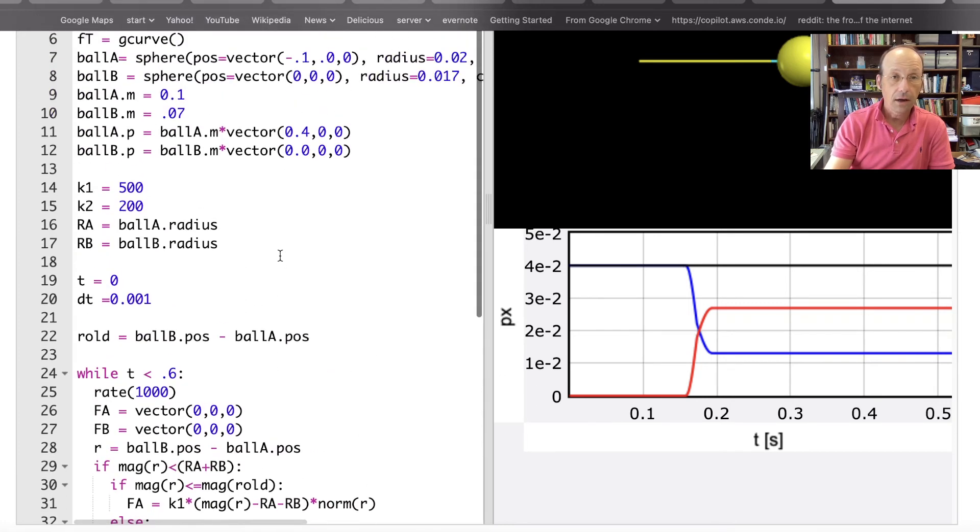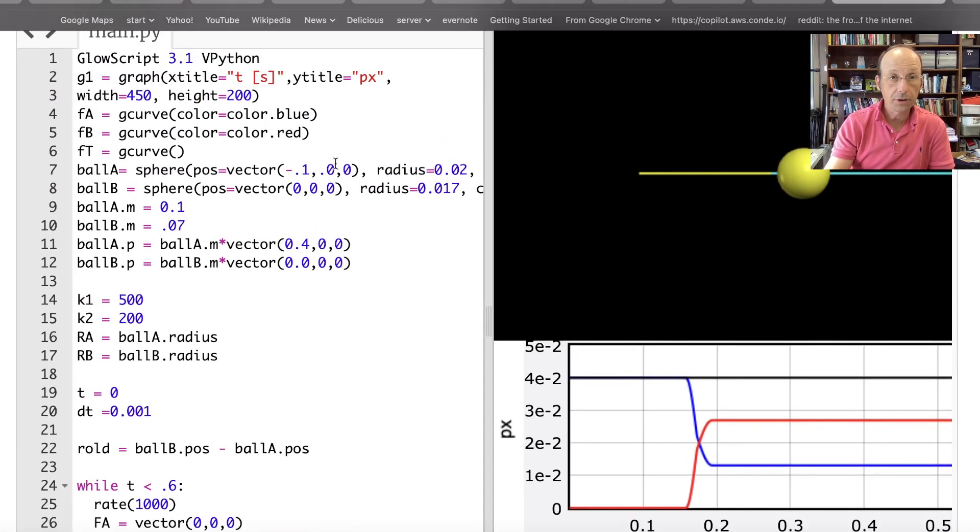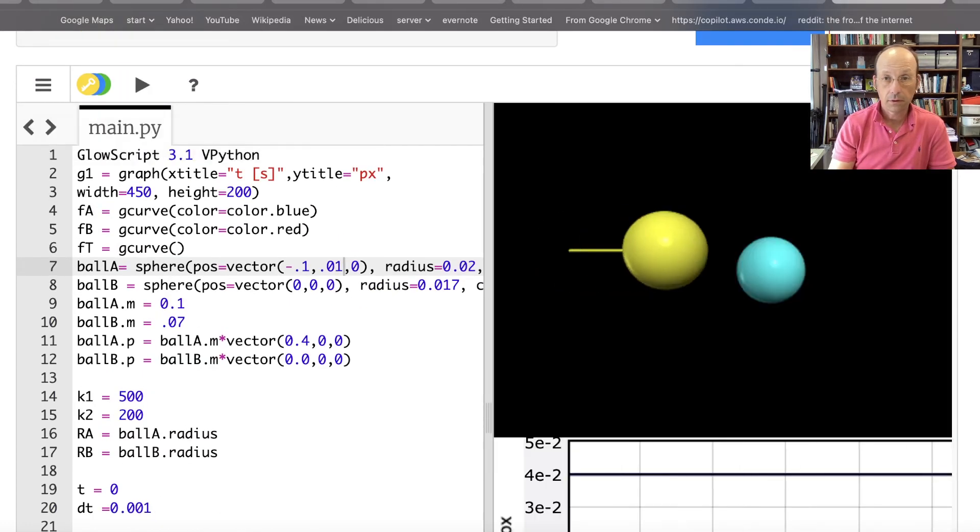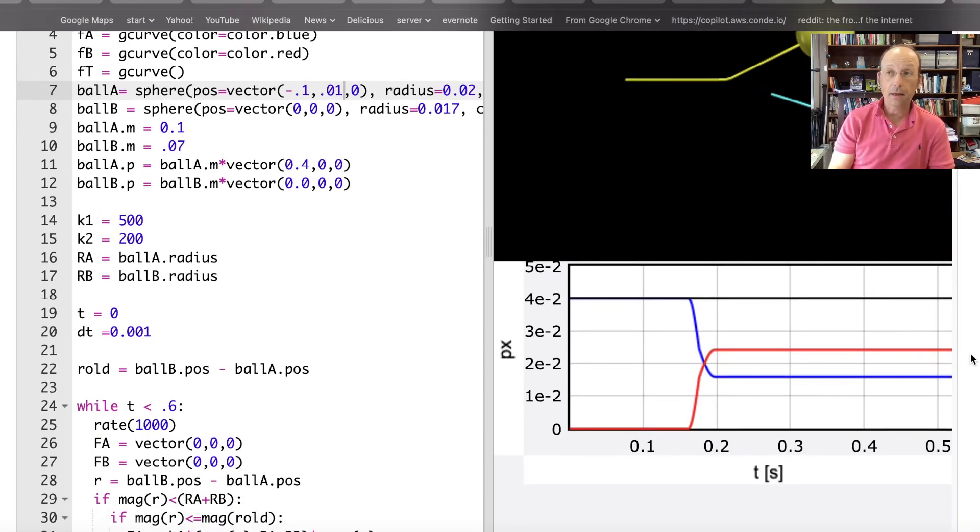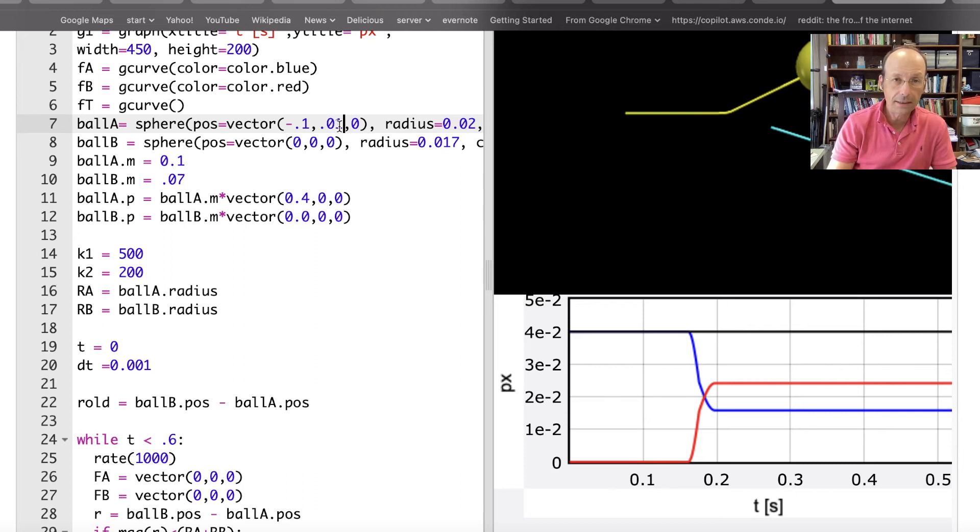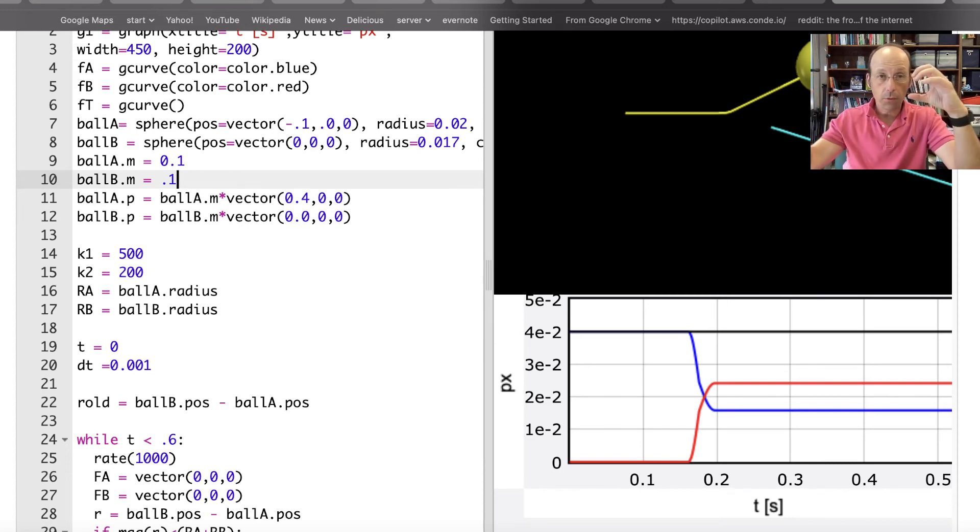Now we can change our initial position, make it a glancing blow. I did this before. And again, momentum's conserved, kinetic energy is not conserved. Let's set this back. This is a really classic collision where I have objects of the same mass. This is what you see in pool, where if one ball comes in and hits it and the other one leaves at the same velocity.